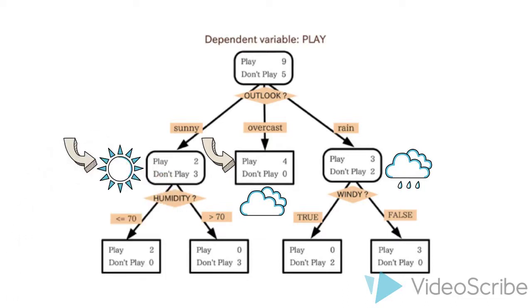But if it is sunny, we have just 3 out of 5 games played, and so we can further partition the data to help our prediction. Now if we ask what the humidity is going to be, we can see that if humidity is greater than 70, none of the games are played. Simple, right?